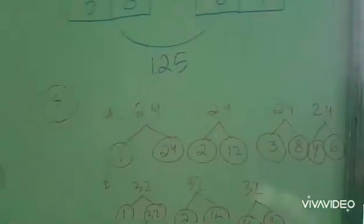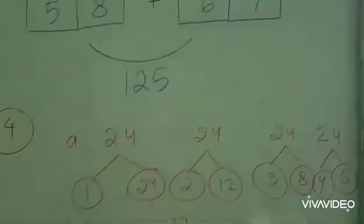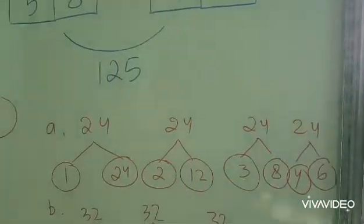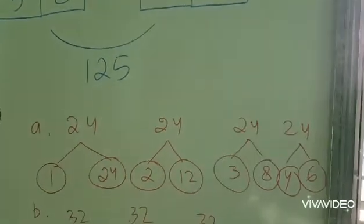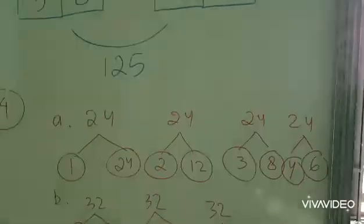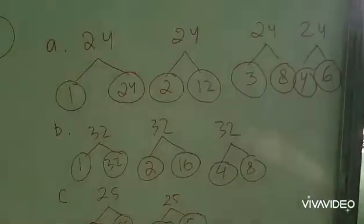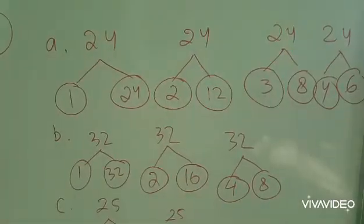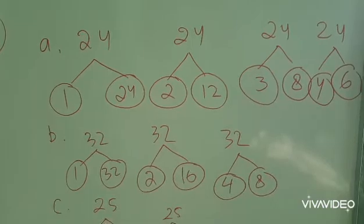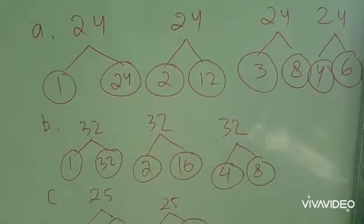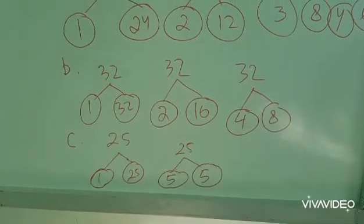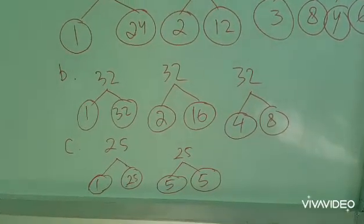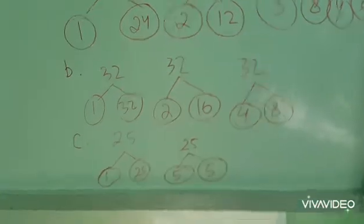Number 4, find the factors of 24. Nah ini adalah faktor-faktor dari 24. 1 times 24, 2 times 12, 3 times 8, 4 times 6. And this is the factor of 32. 1 times 32, 2 times 16, 4 times 8. Factor of 25, 1 times 25, 5 times 5 is 25.